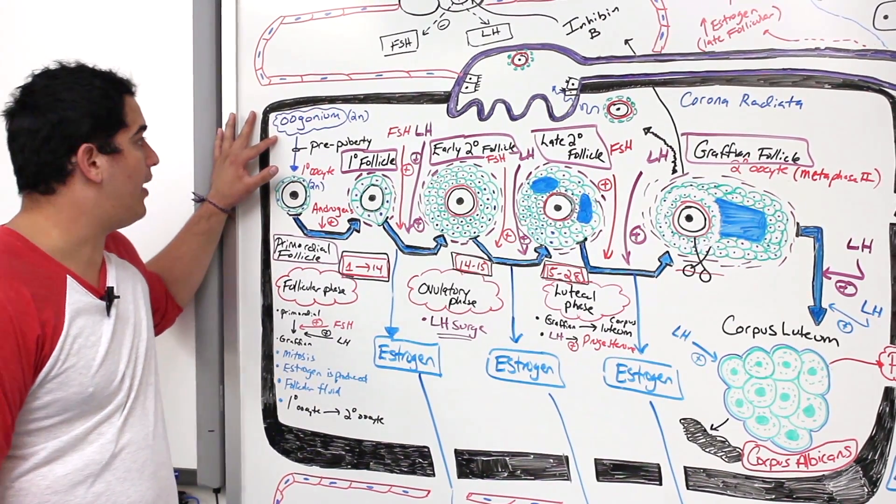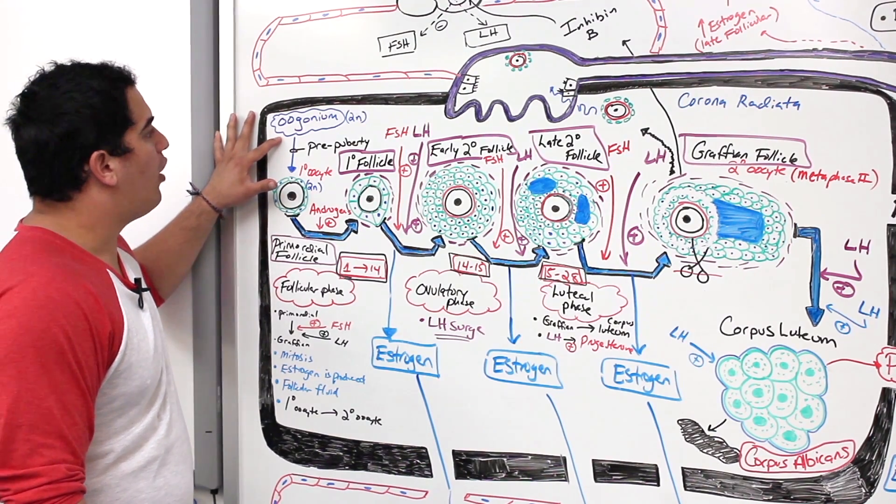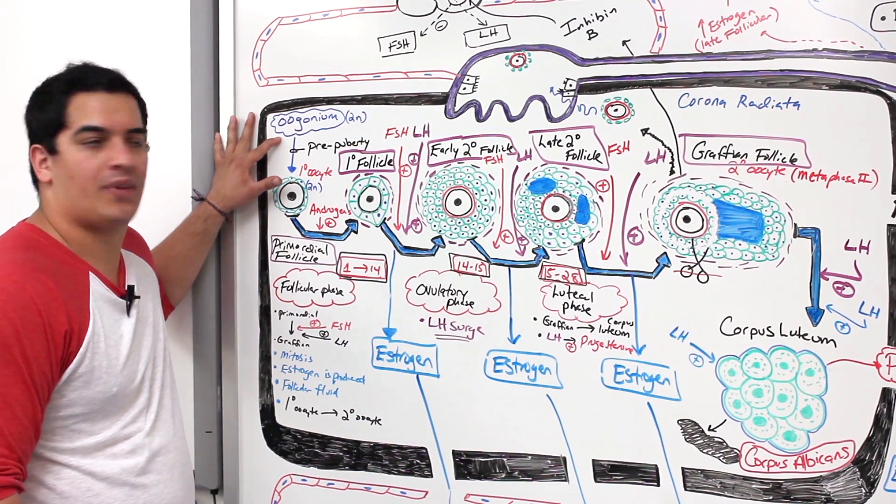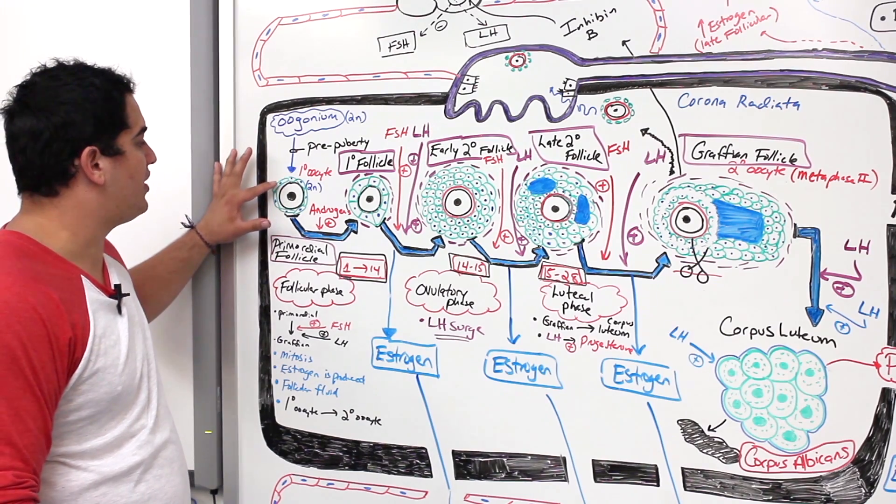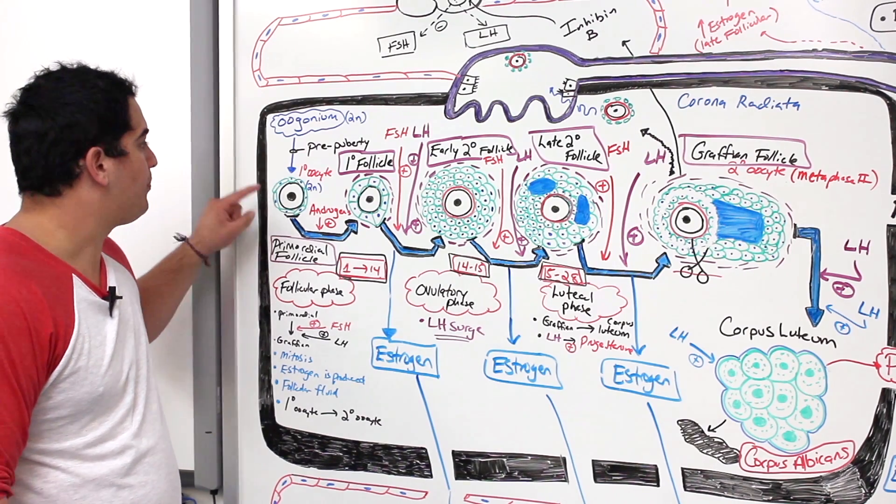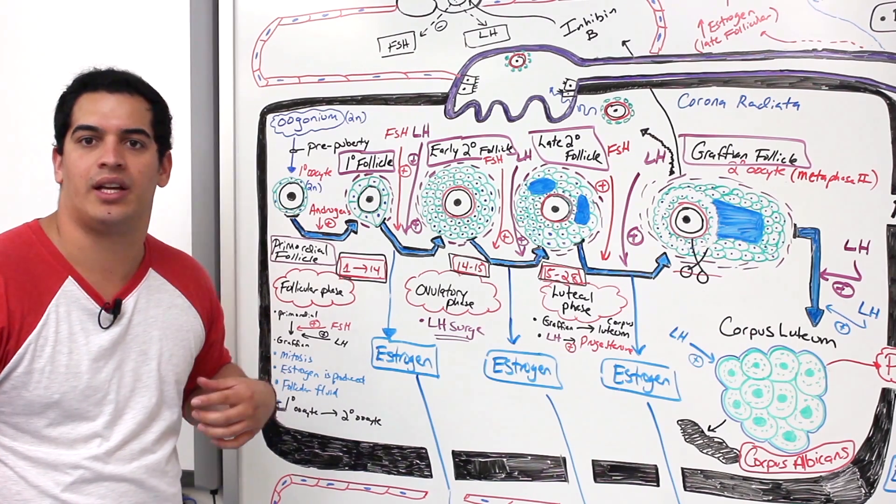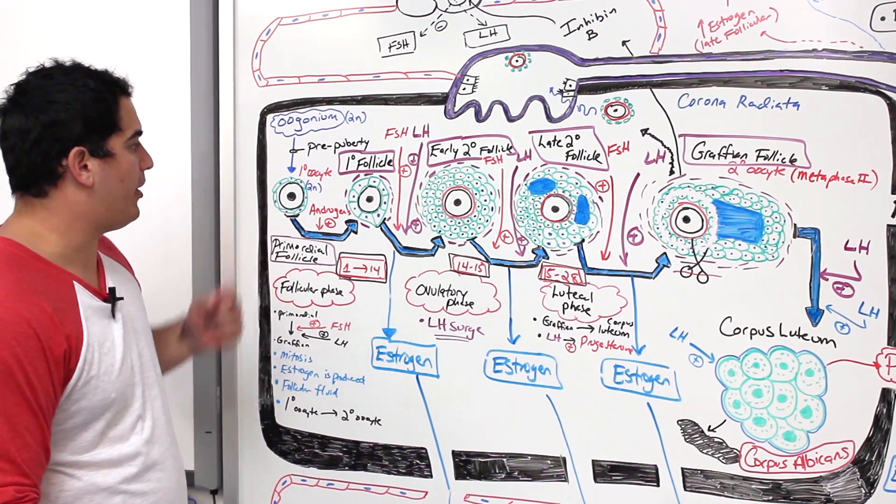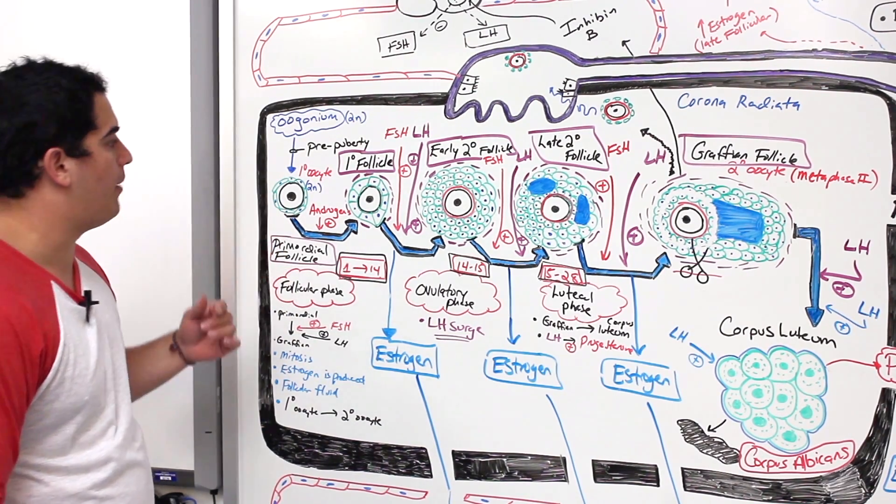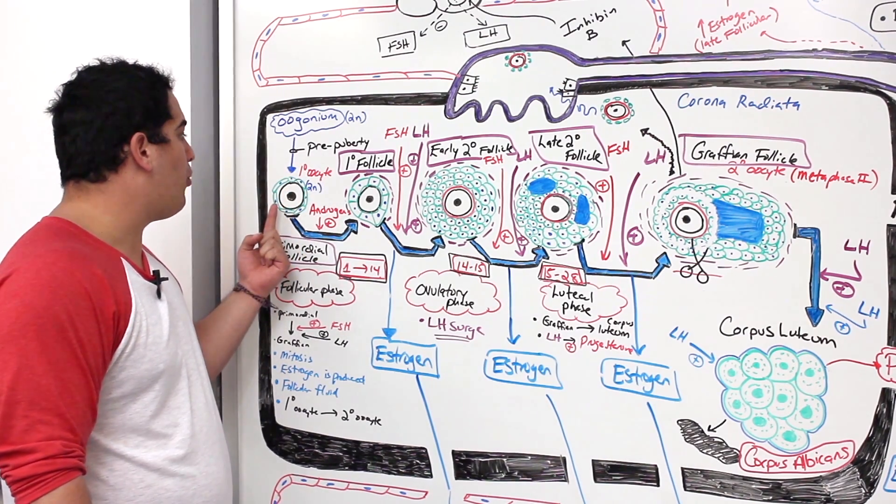Before you hit puberty, those oogoniums are undergoing mitosis, undergoing excessive mitosis and producing tons of these little primordial follicles. These primordial follicles are just primary oocytes which have this single layer of simple squamous-like follicular cells around it, and it's still a primary oocyte so it's frozen in prophase one.